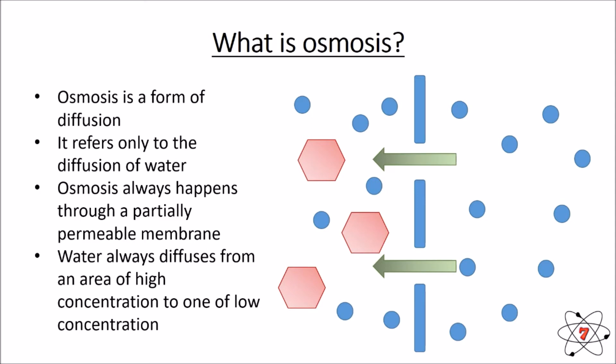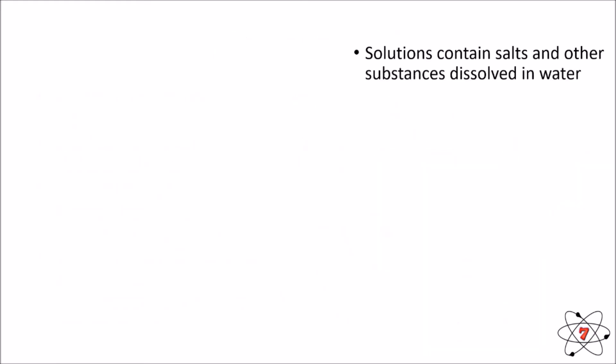Water always diffuses from an area of high concentration to one of low concentration. If we look at the picture here, we can see the water is moving from the right to the left through the partially permeable membrane. The molecules that are red, which are sugar molecules, cannot pass back the other way. So these sugar molecules cannot pass from high to low concentration across this membrane because they will not pass through it.